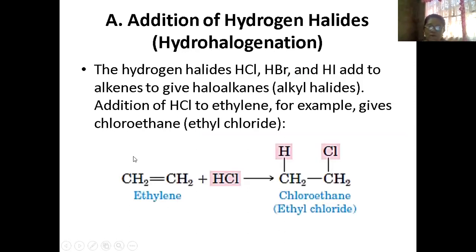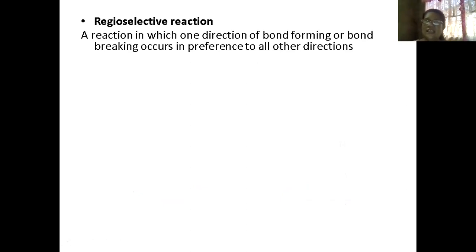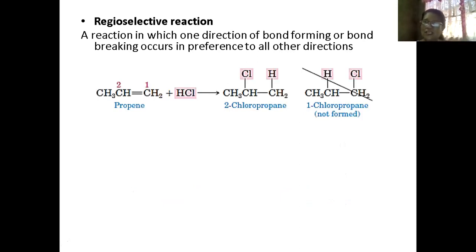For example, ethylene — when ethylene is added with HCl, you will have two formations: either your hydrogen adds to one carbon and chlorine adds to the other, or vice versa. Since it is ethylene, both give the same product: ethyl chloride. But if it is not ethylene, we will have a regioselective reaction. This is known as — it follows Markovnikov's rule.